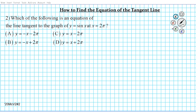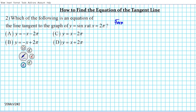For this one, we're going to start off by writing down the formula that's going to guide our problem solving process. The formula we're going to be using is the formula for the equation of the tangent line — I'm going to call it EOT. It's going to be y minus y one equals m times x minus x one. This is the point-slope form of the equation of a line, so you're going to be using algebra here.